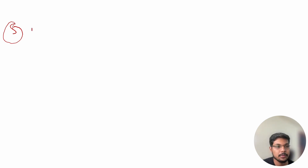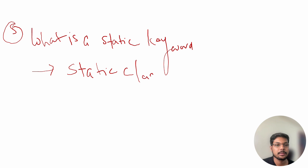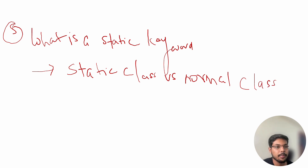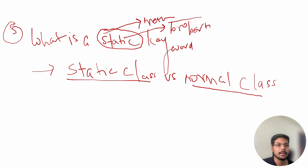The fifth question is: what is the static keyword, and what is the difference between a static class and a normal class? Prepare what a static class is used for and how the static keyword is used. For example: can you use the static keyword with a method, a property, or a variable? Can you mark a property, method, or variable as static?